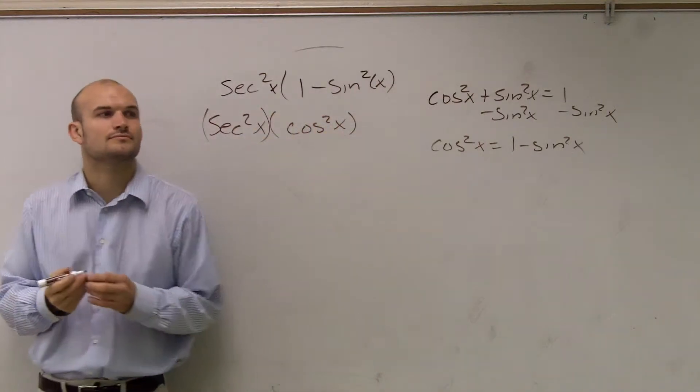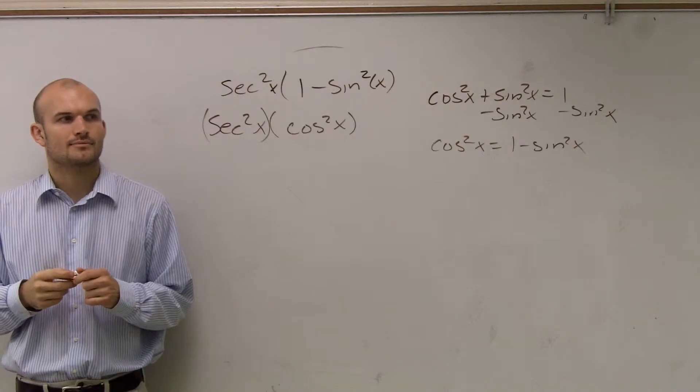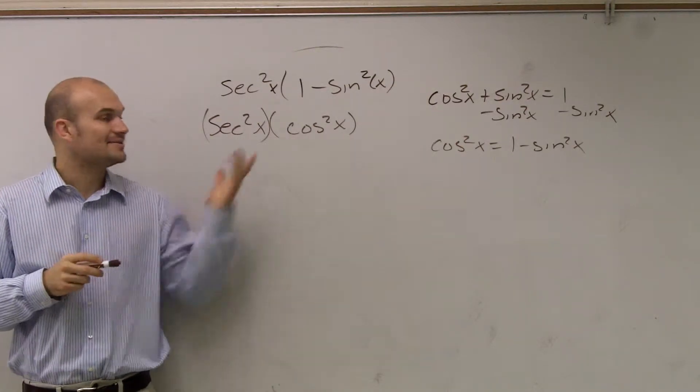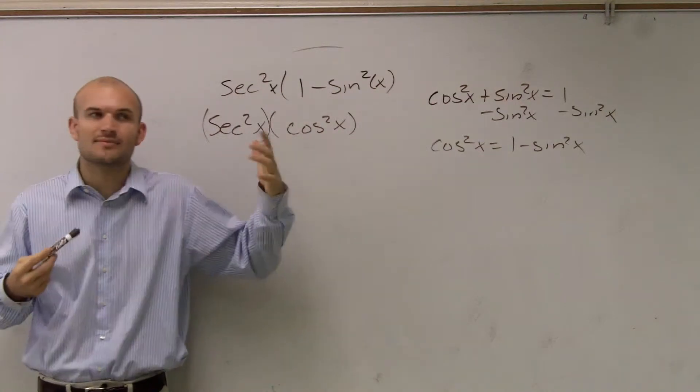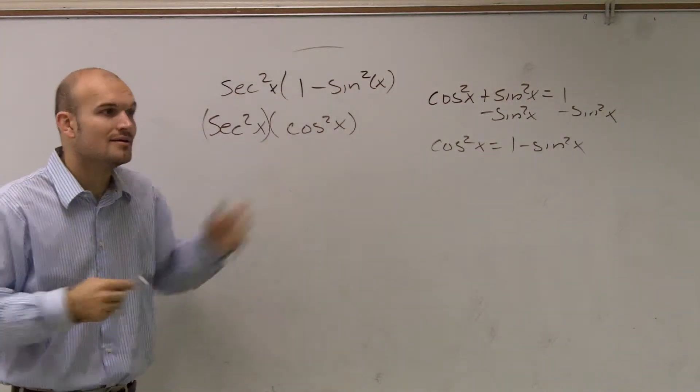Does everybody follow me? Paul? So now, how can I rewrite secant, right? Think about your identities. You can write it as what? 1 over cosine. Absolutely.